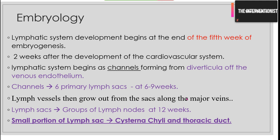Some of these lymph sacs form groups of lymph nodes by the end of 12 weeks. A small portion of the lymph sac gives rise to the cisterna chyli and thoracic duct, which drains into the SVC. Different studies have suggested it is a 50-50 thing — 50% on the right side and 50% on the left side, depending on embryology. The key embryology points: starts at week 5, channels form at 6-9 weeks, and almost complete development by 12 weeks.